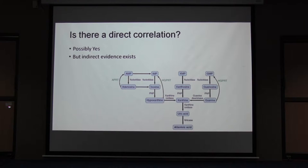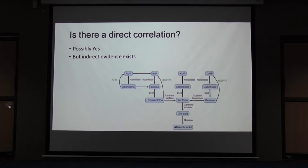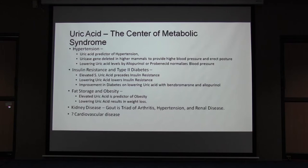But is there a direct correlation? Possibly yes, possibly no. But there is a lot of indirect evidence that exists. What is shown here is the metabolism of how uric acid is formed from cyclic AMP and how it is destroyed by uricase. One of the main culprits here appears to be either AMP or uric acid, which is responsible for things that go wrong in patients with coronary artery disease.